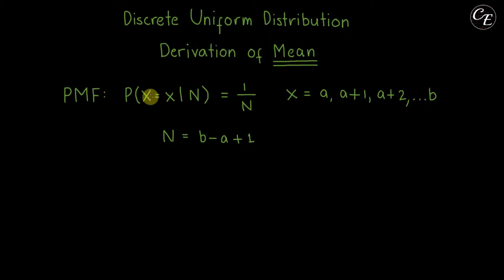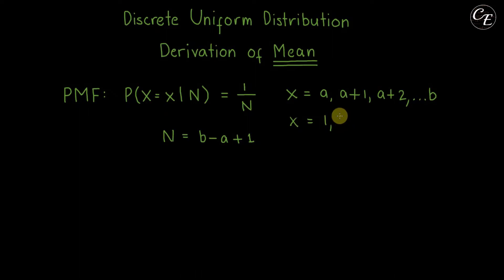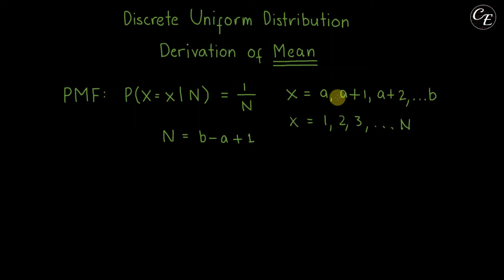The random variable for this distribution has integer values from a to b. Now, if you're looking for the derivation where the value of the random variable is from 1 to n instead of a to b, that derivation is in another video and I've provided the link in the description below, so you can check it out if you're interested.